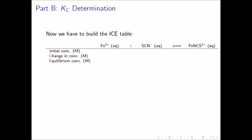At this point, we have to build an ICE table to complete our calculation. The top row is a restatement of the chemical equation. Below that, we have rows for initial concentrations, change in concentration, and equilibrium concentrations. We fill in the known initial concentrations: 1.00 times 10 to the negative 3 molar ferric ion, 6.00 times 10 to the negative 4 molar thiocyanate ion, and 0 molar of the complex. At equilibrium, we have 7.10 times 10 to the negative 5 molar complex.